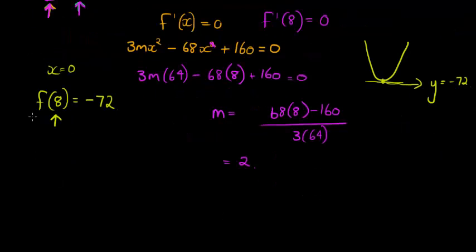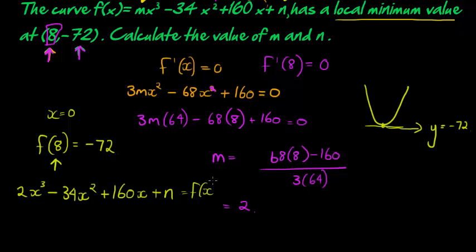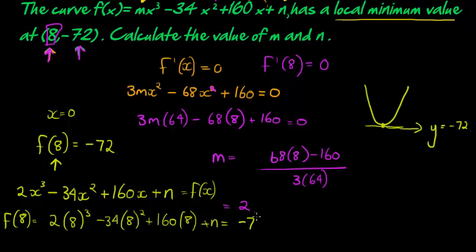How do we get that negative 72? We substitute it into the original function. So, we know this is my equation. So, now I already have m is 2. So, 2x³ minus 34x² plus 160x plus n, this is my f(x). So, f(8) would equal 2(8)³ minus 34 times 8² plus 160 times 8 plus n. That answer should give me negative 72.